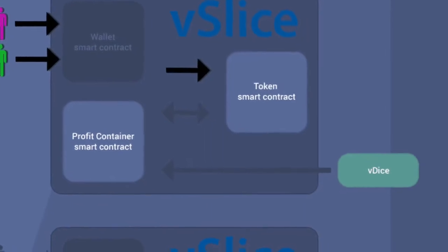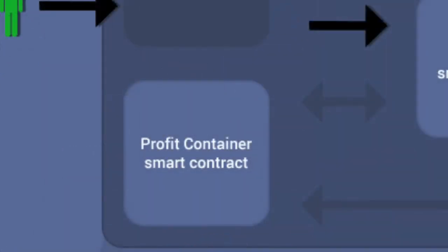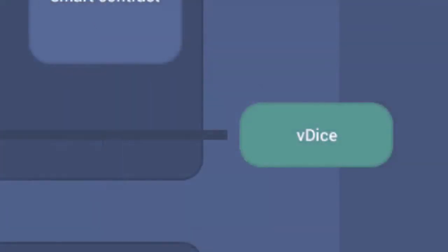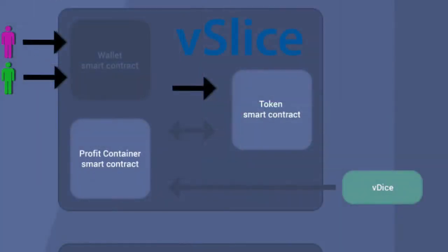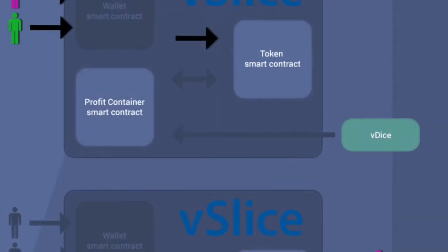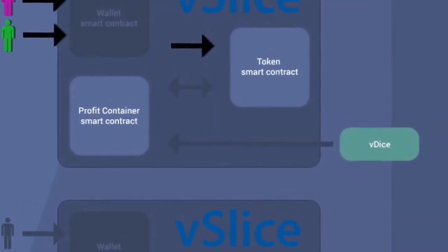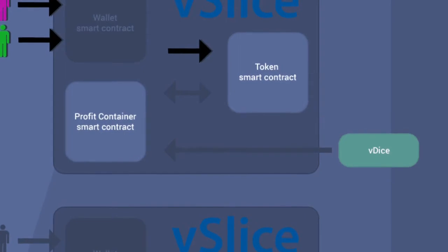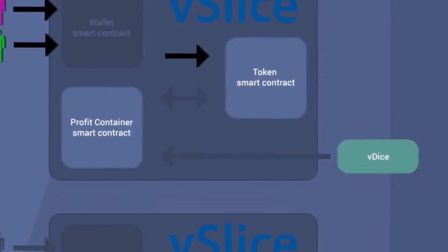No more tokens can be issued. Now, the next contract is the profit container smart contract, which has two parts. The first part moves value from the vDice game straight to the vSlice profit container — think of this like commission for running the game. The second part references the token smart contract and validates the token balance of the player: players that win, win money, and players that lose, lose the initial money they invested.